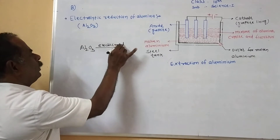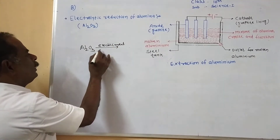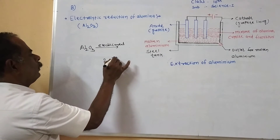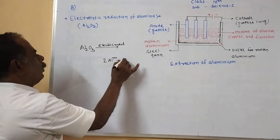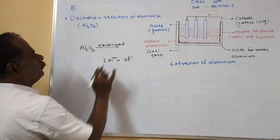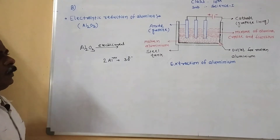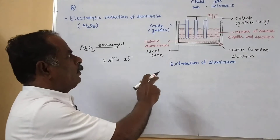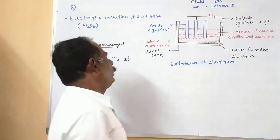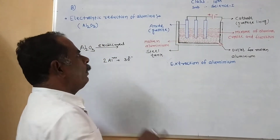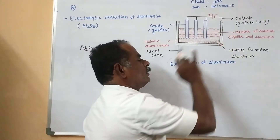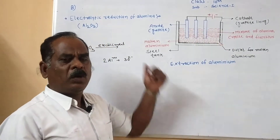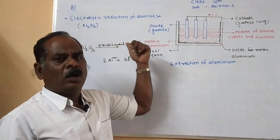When electricity is passed through the molten mixture, alumina Al₂O₃ is electrolyzed. After passing the electric current, it dissociates to form aluminium ions and oxygen ions. These oxygen ions are attracted towards the anode and aluminium ions are attracted towards the cathode.